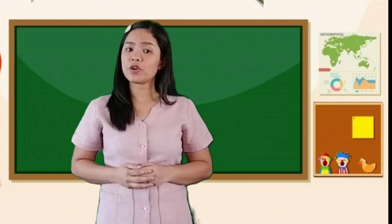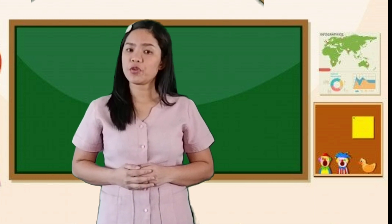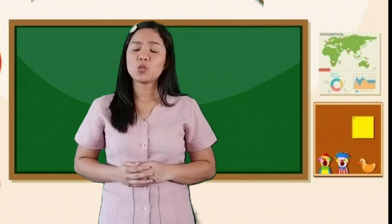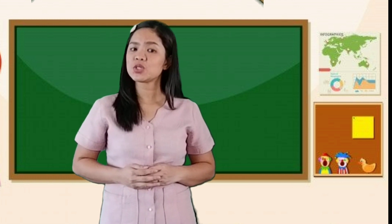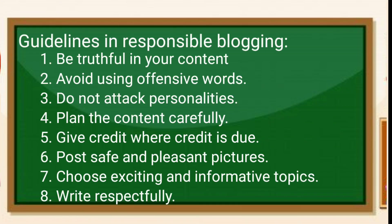In blogging, we also have the do's and don'ts. A blog is one of the websites read all over the world by many people from different cultures, socioeconomic backgrounds, professions, and hobbies. It is very important that one who posts and shares blogs should follow different guidelines to ensure responsible blogging. First, be truthful in your content — write only what is based on facts and real-life experiences, not fiction. Two, avoid using words that are offensive to people in general. Three, do not attack personalities — give respect to people no matter what they do or say. Four, plan the content of your blog carefully; cite reliable and recognized sources if you edit some parts of the content of another writer or author.